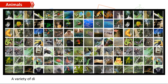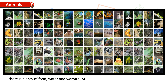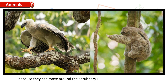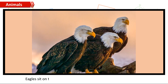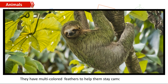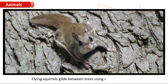Millions of animal species live in the rainforests because there is plenty of food, water, and warmth. Arboreal animals that live among the branches need to be able to move from tree to tree, while small creatures live on the forest floor. Eagles sit on the branches of the tallest trees looking for prey. Parrots have strong curved beaks to break open nuts and seeds, with multicolored feathers to help them stay camouflaged among the colorful blossoms. Sloths have hook-like claws to grip branches and sleep hanging upside down. Flying squirrels glide between trees using a flap of loose skin connecting their front and hind legs.